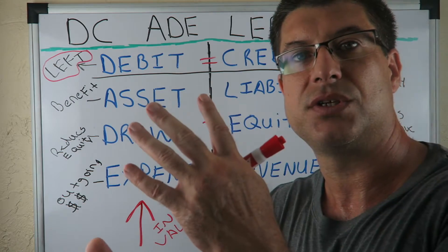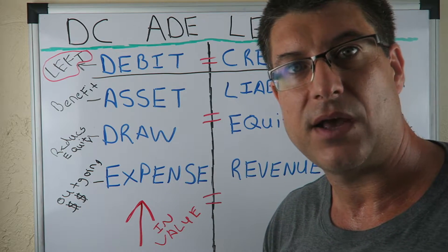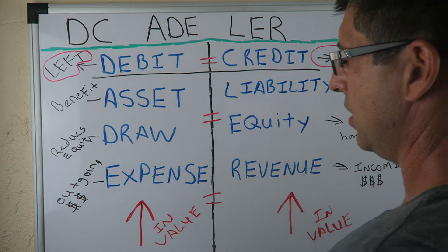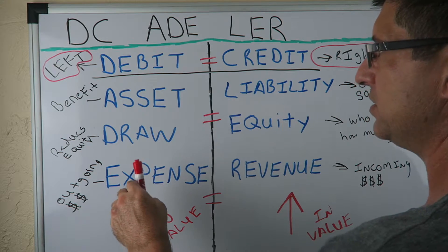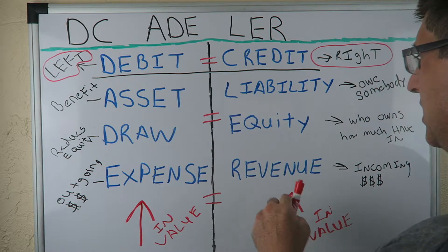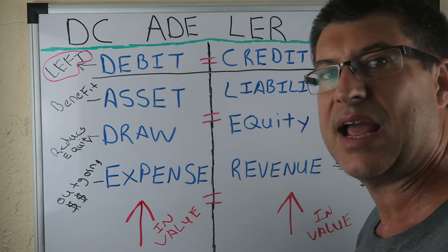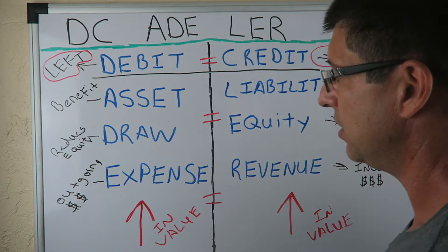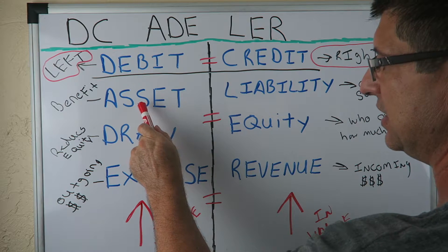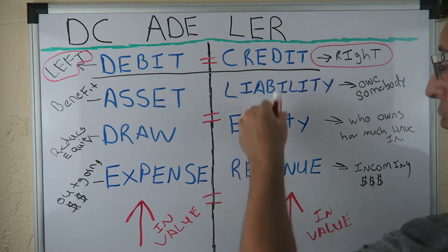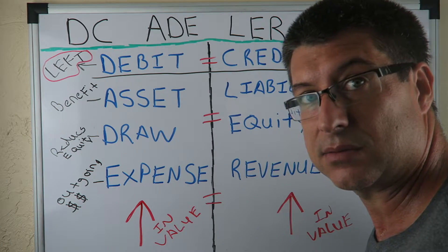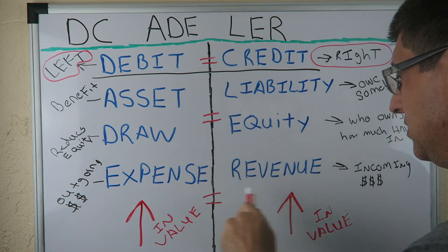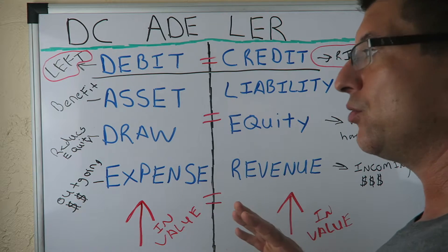Now it's reversed. If it's going down in value, assets going up are a debit, so if an asset is decreasing in value we credit it — it's the opposite. It switches sides, debit or credit, all six of these boxes. If they're going down, you flip it.